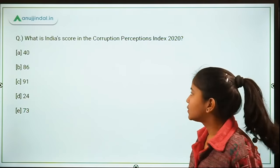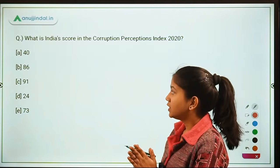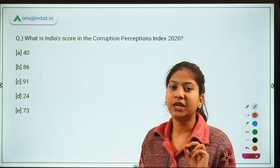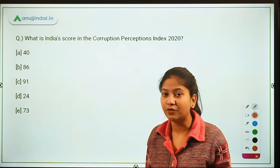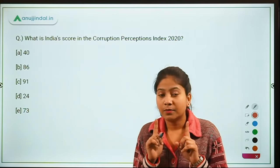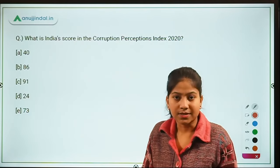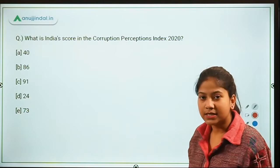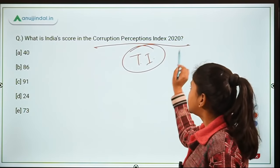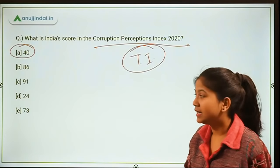The next question asks: what is India's score in the Corruption Perception Index 2020? The options are 40, 86, 91, 24, and 73. India's score is 40 and India's rank is 86. This is one of the most important indices, released by Transparency International. It is important to memorize each and every India-specific data point from major indices.